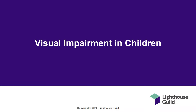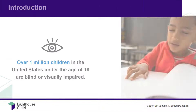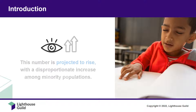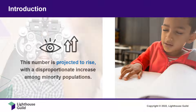Hello, and welcome to today's program, Visual Impairment in Children. Over 1 million children in the United States under the age of 18 are blind or visually impaired. This number is projected to rise in upcoming years, with a disproportionate increase among minority populations.